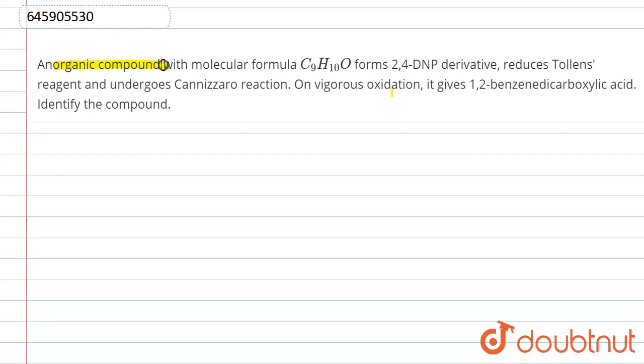an organic compound with molecular formula C9H10O forms 2,4-DNP derivative, reduces Tollens' reagent, and undergoes Cannizzaro reaction.